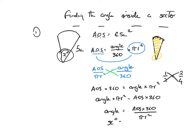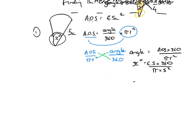Now I can put in numbers. x equals the area of the sector times 360, so that's 6.5 times 360 divided by pi times the radius squared — pi times 5 squared. Enter all that into your calculator to one decimal place and that gives 29.8 degrees. If you don't get it first time, give me a shout in class.